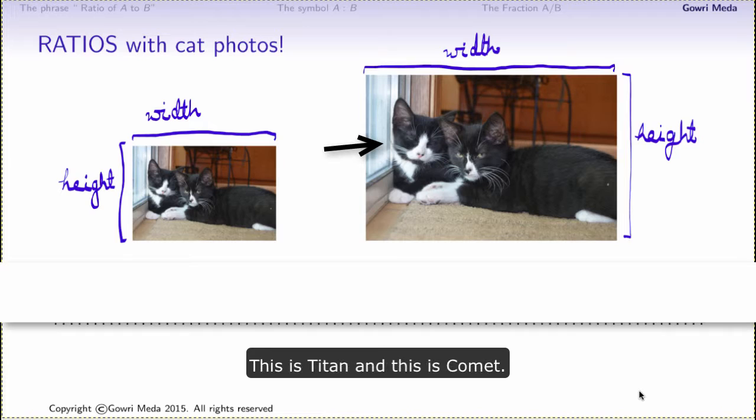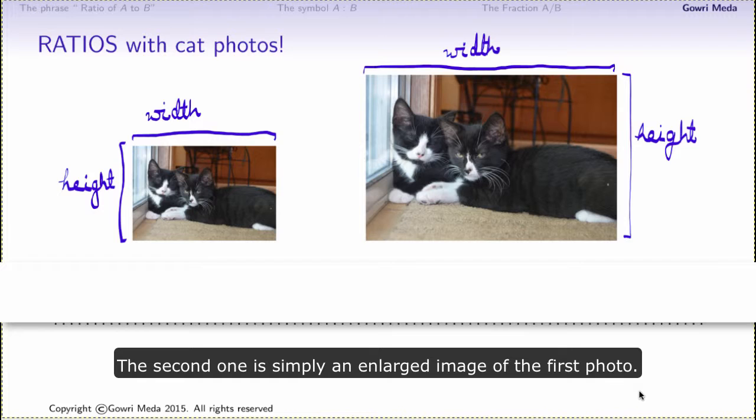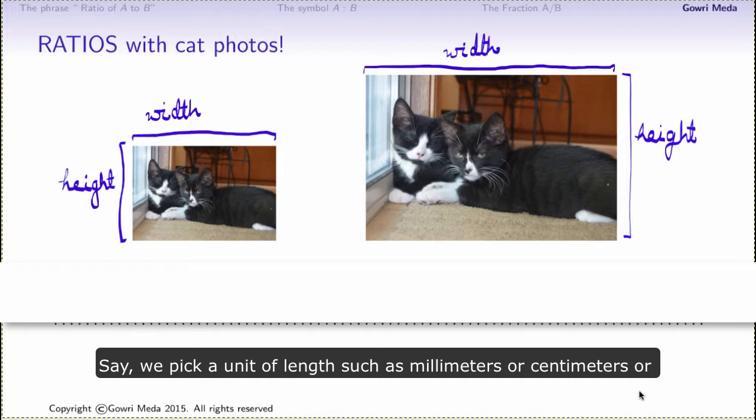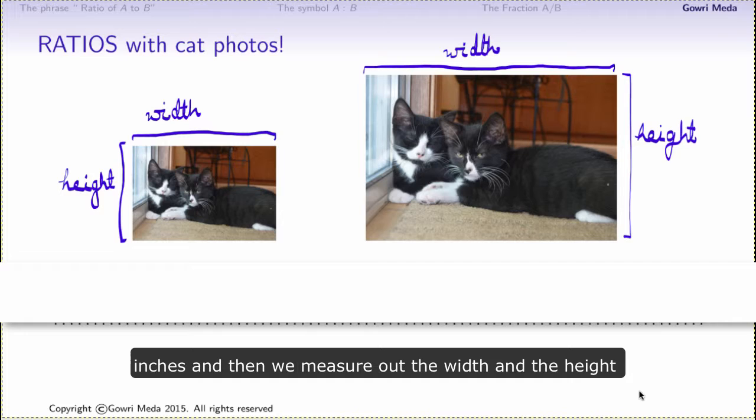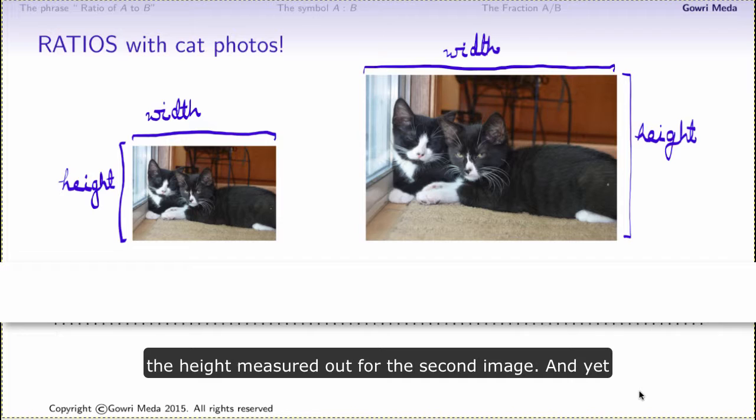Let's start by taking a look at two photos of our cats. This is Titan and this is Comet. You've probably already noticed that they're really not two different photos. The second one is simply an enlarged image of the first photo. Each image is a rectangle with two dimensions which we may call the width and the height. Say we pick a unit of length such as millimeters or centimeters or inches and then we measure out the width and the height of each of the images.